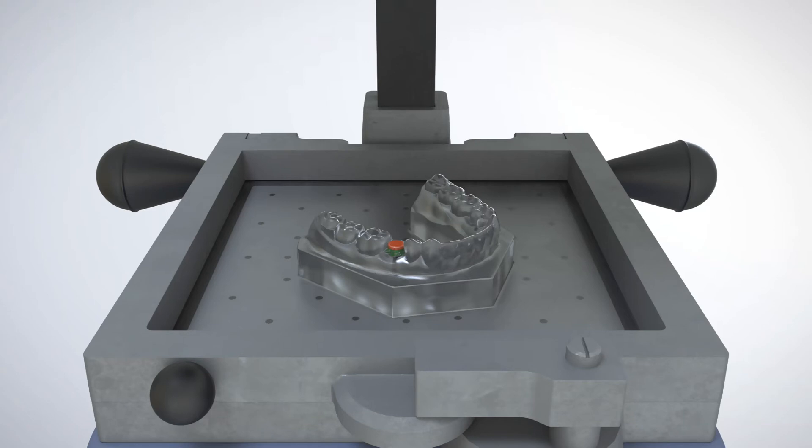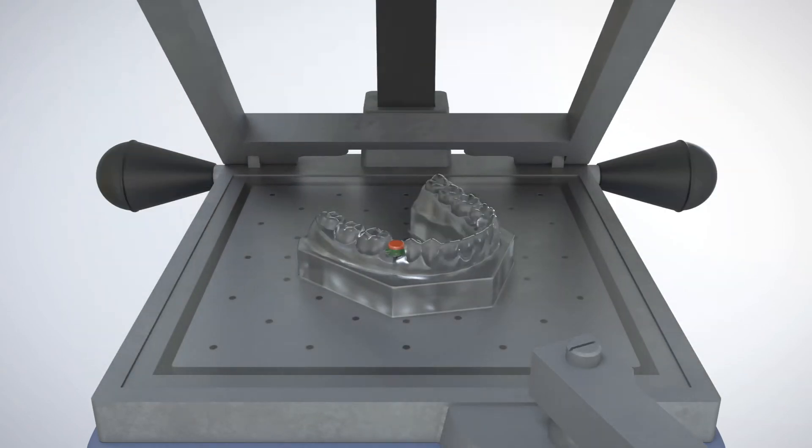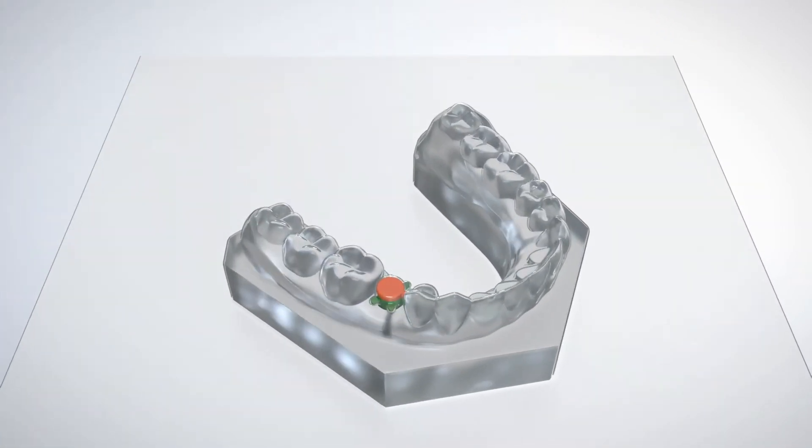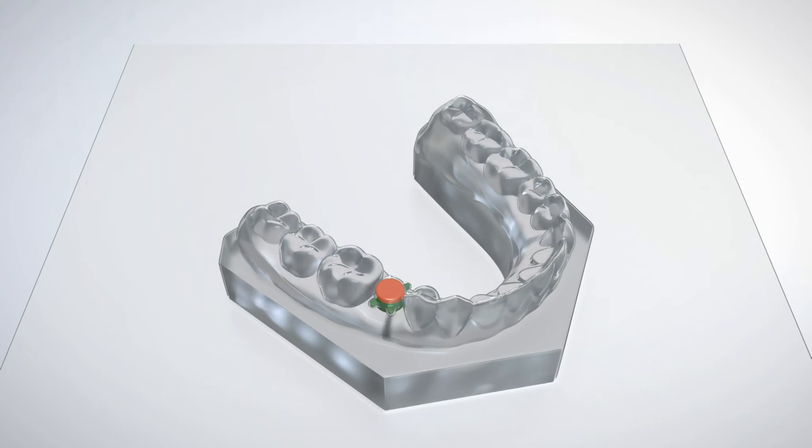The newly formed plastic GRS vacuum forming assembly and model are removed from the forming machine. Utilizing a separating disc and laboratory handpiece, the surgical guide is roughly trimmed along the free gingival margins of the teeth. A channel is cut in the plastic to remove the excess material.